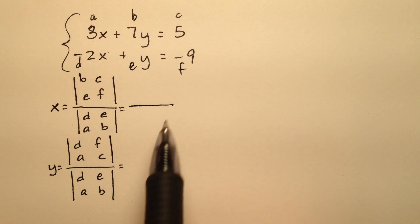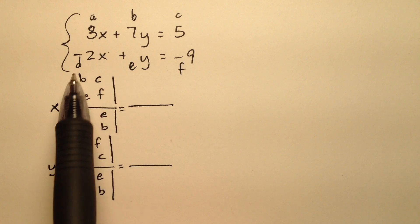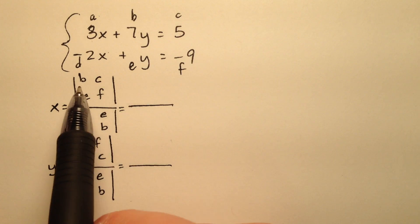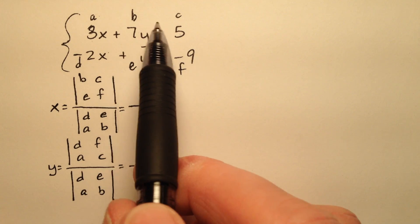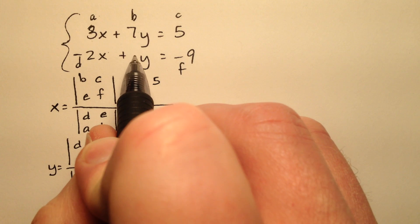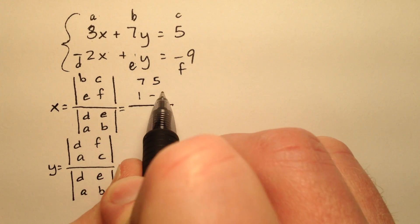So now I'm going to write all these determinants with members A, B, C, D, E, F, and I'll plug in all the numbers. So B, C is 7, 5. And E, F is 1, negative 9.